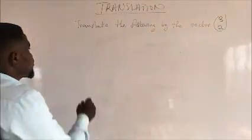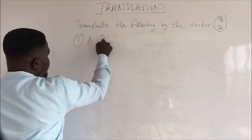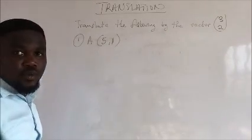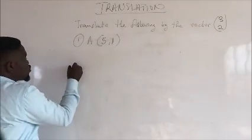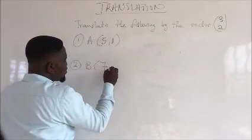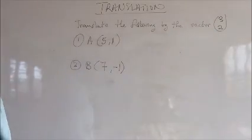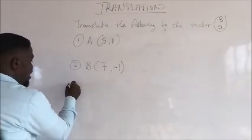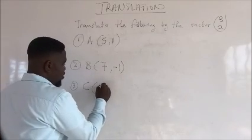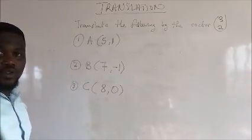So you have number one: vector A (5, 1). This is simple. Number two: vector B (7, -1). And last but not least, vector C (8, 0). Good.